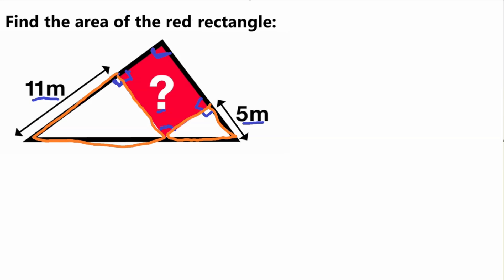If they turn out to be similar, we'll have more information to work with. What we're actually trying to find is the area of the rectangle, which is this side length times this side length. I'm going to name this side x and this side y, so we want to find x times y.